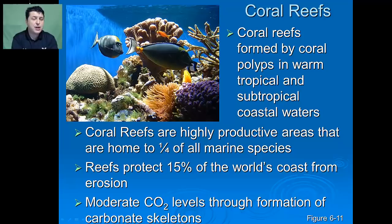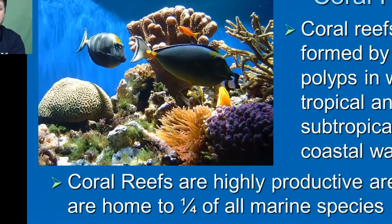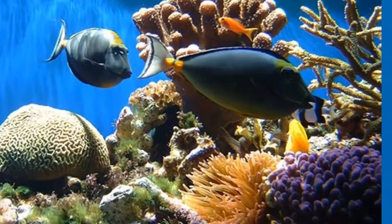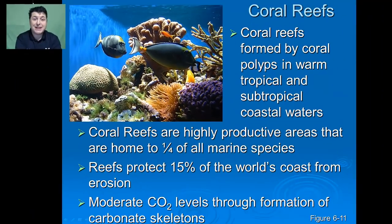Right on the edge of our continental shelf we might find coral reef systems. Coral reefs are formed by coral polyps in warm tropical and subtropical coastal waters. These reef systems are highly productive areas that are home to a quarter of all marine species. The reefs protect 15% of the world's coast from erosion and moderate carbon dioxide levels through the formation of carbonate skeletons of the coral organisms.